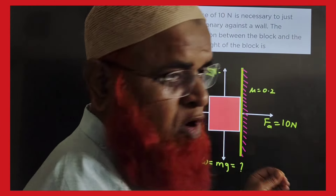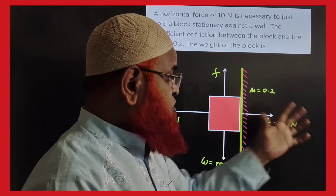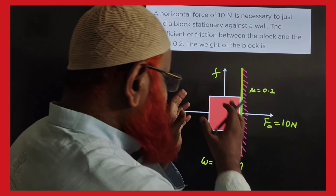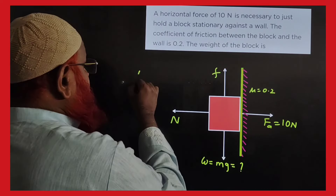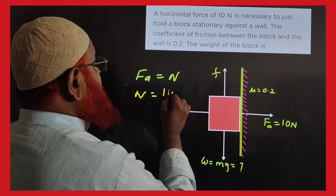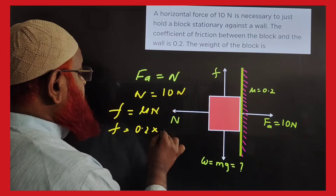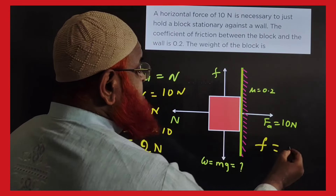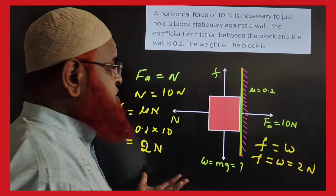A block is fixed on a wall by a horizontal force of 10 N with mu = 0.2. Applied force equals normal reaction, so N = 10 N. Friction = mu × N = 0.2 × 10 = 2 N. Since friction counterbalances the weight, the weight of the block is 2 newtons.